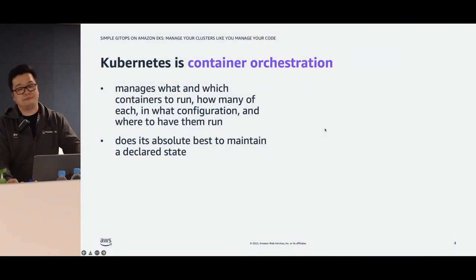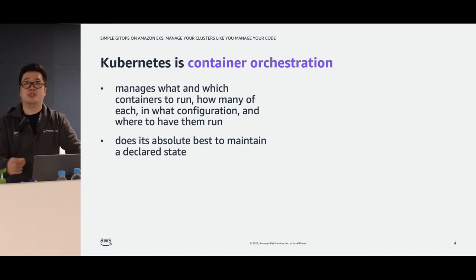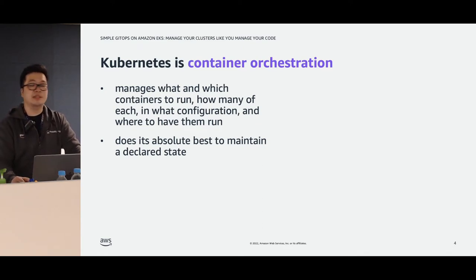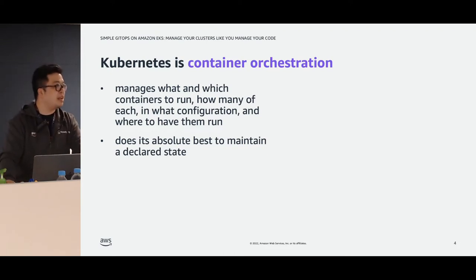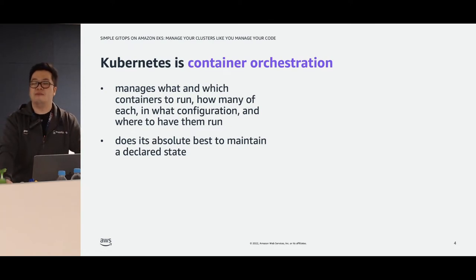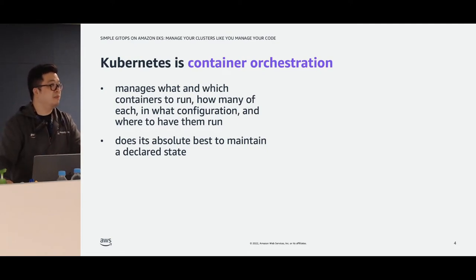Kubernetes is a container orchestration tool. You tell it that you want to run these containers — maybe three, maybe five — and Kubernetes does its best to maintain that for you. If you ask for five copies of a container, it will do its absolute best to make sure there are exactly five running. If one crashes or there are suddenly ten, Kubernetes will make sure you have exactly five — it's pretty much an automatic health check.